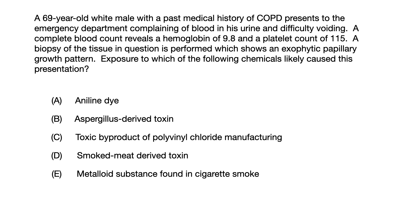Then you would have had to ask yourself, what is the carcinogenic chemical associated with urothelial carcinoma? Once you identified naphthalamine, you would have then had to look at answer choices A through E and determine which one of those descriptions accurately describes naphthalamine.